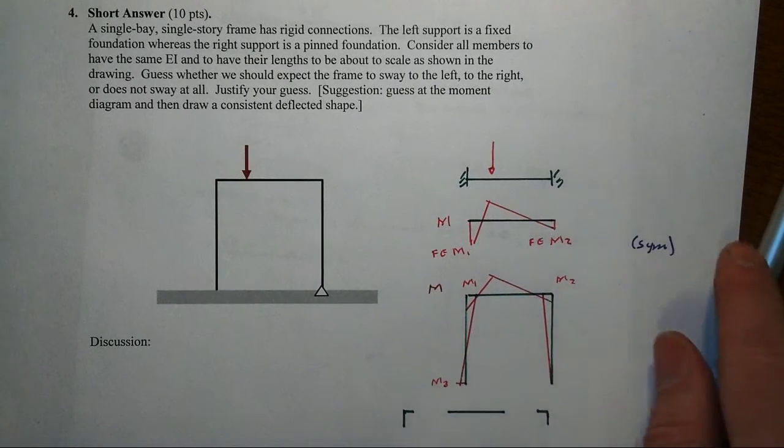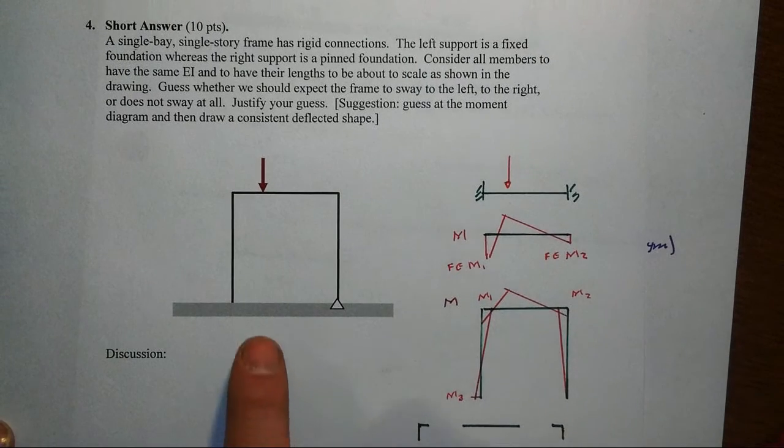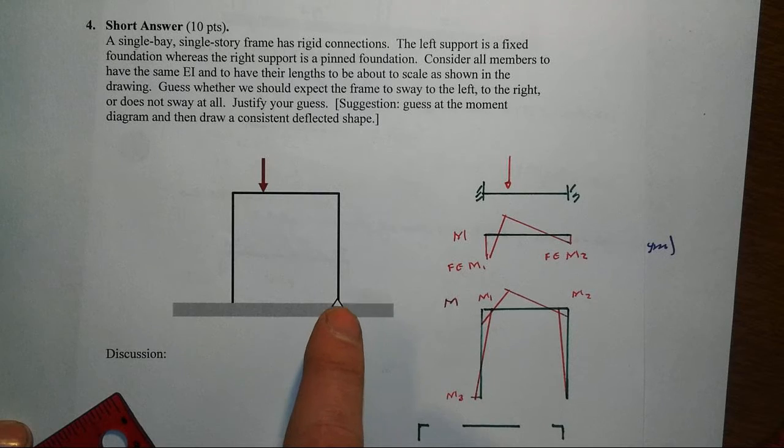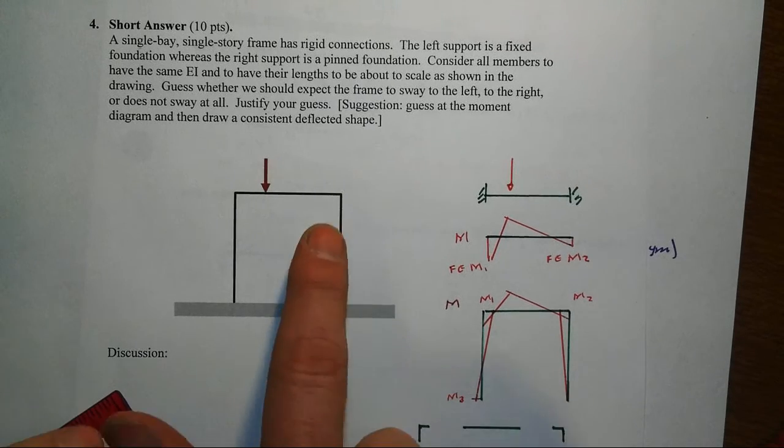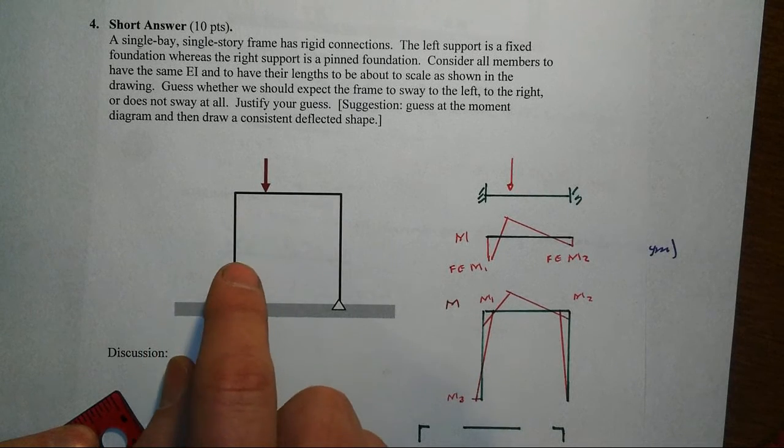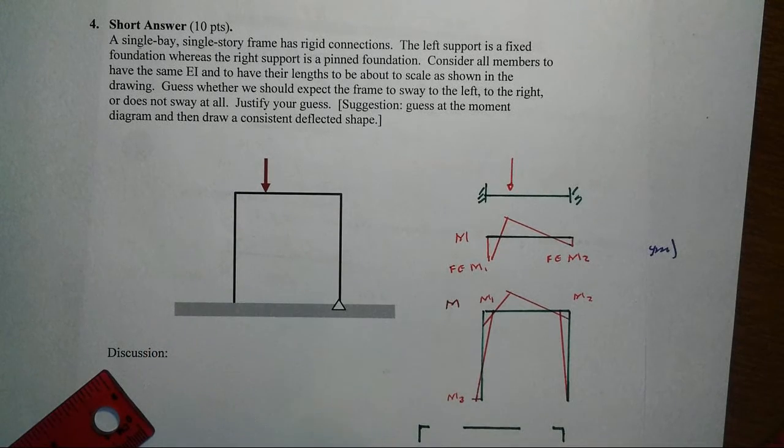In this item we have a single bay, single story frame, fixed connection at the left and a pin foundation at the right. All other joints are rigid here. The constant EI and also the same EI for the beams and the columns.